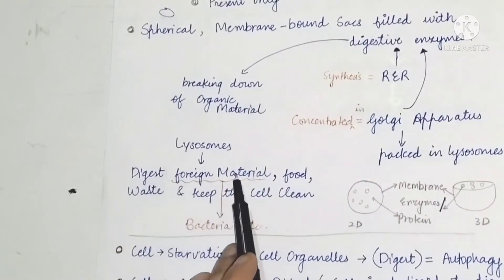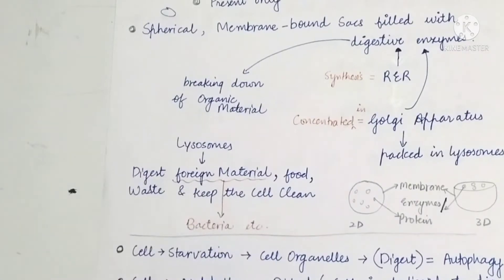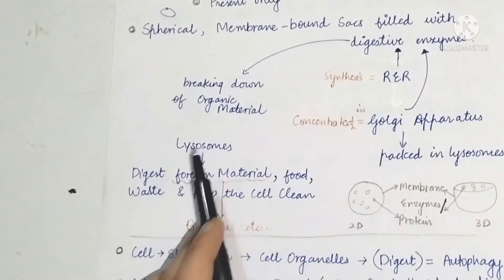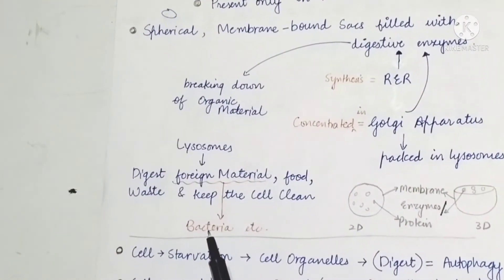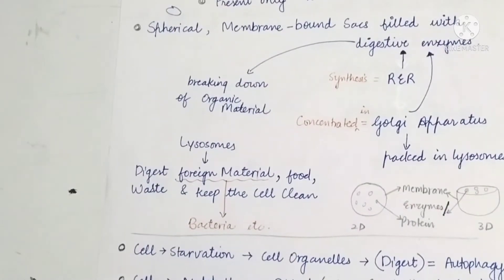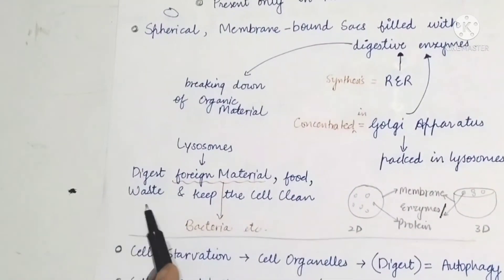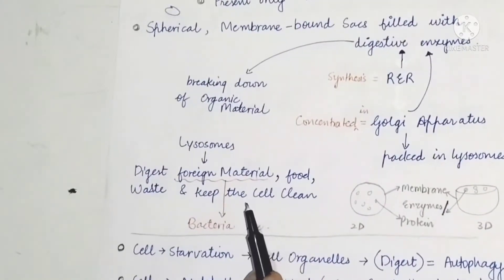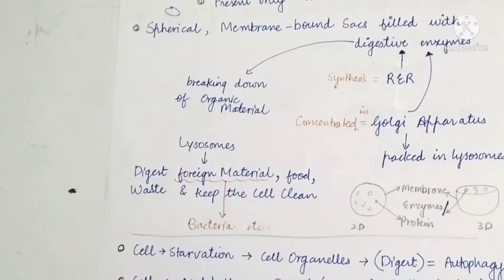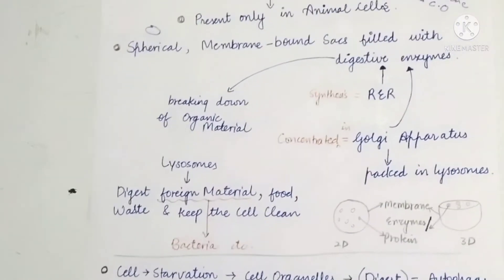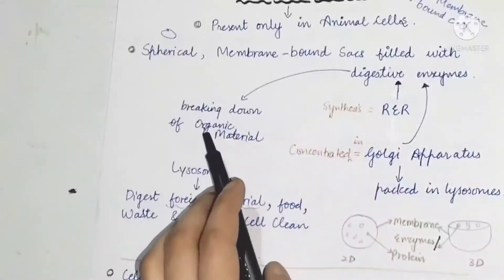Lysosomes digest foreign materials that enter the cell. The digestive enzymes help break these down. This keeps the cell clean — lysosomes digest foreign particles such as bacteria and viruses along the way, maintaining cellular cleanliness.